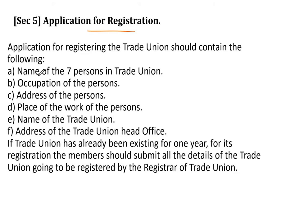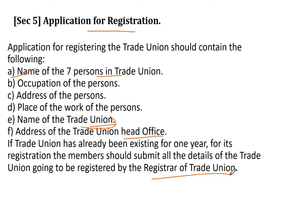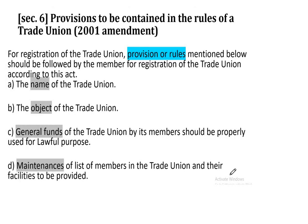Application के लिए 7 members के — name of the 7 persons in trade union — full name, occupation of person, address of person, place of work of the person, name of the union (unique name जो पहले से किसी trade union का नहीं है), और address of the trade union head office — यह सब details देनी होती हैं। If the trade union has already been existing for one year, all details must be submitted and verified by the registrar of trade union।